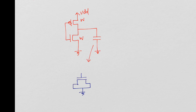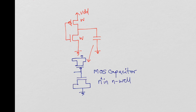Or you could use a combination of N and P: an N device and a P device tied to VDD, so a P channel and an N channel. You could also use a MOS capacitor, which I'll talk about in a different video — typically built in an N-well as N-plus in N-well. Now, by 'weak' transistors we mean devices with a larger channel length, a lower W, or a higher L to make the devices weak.